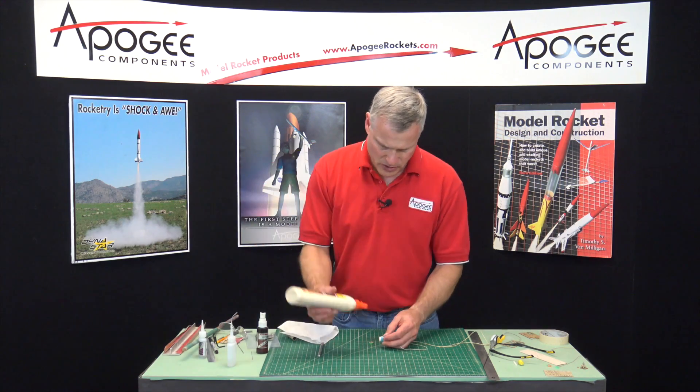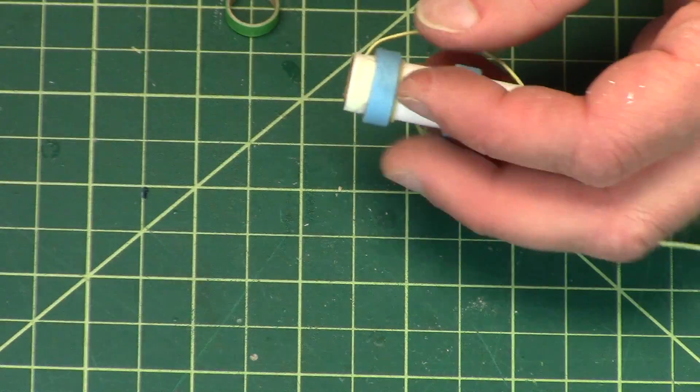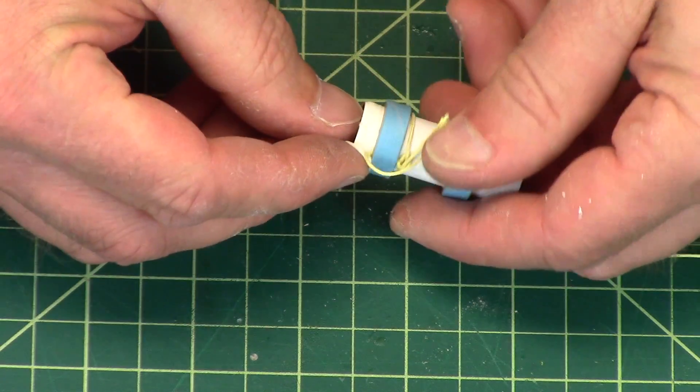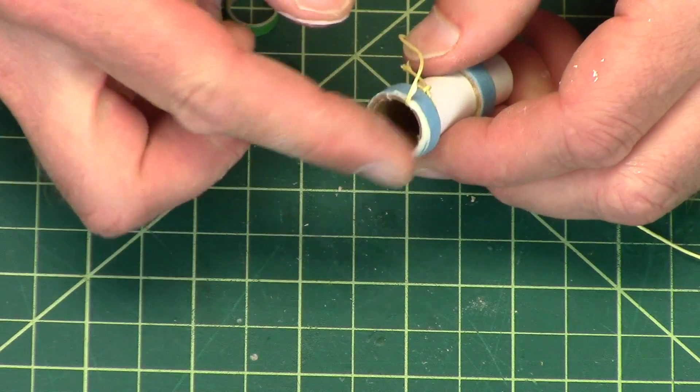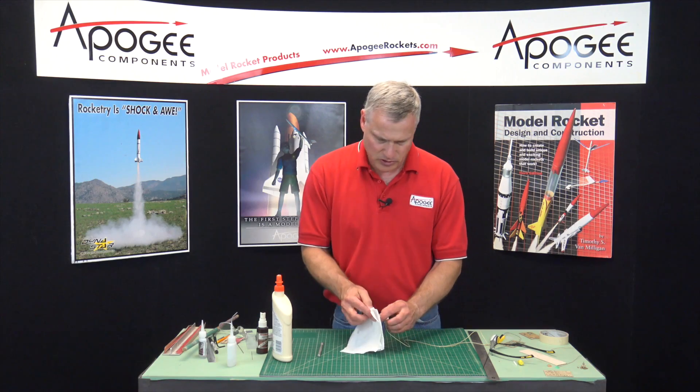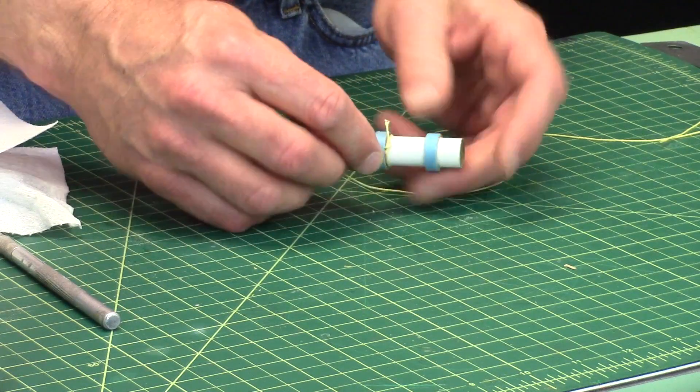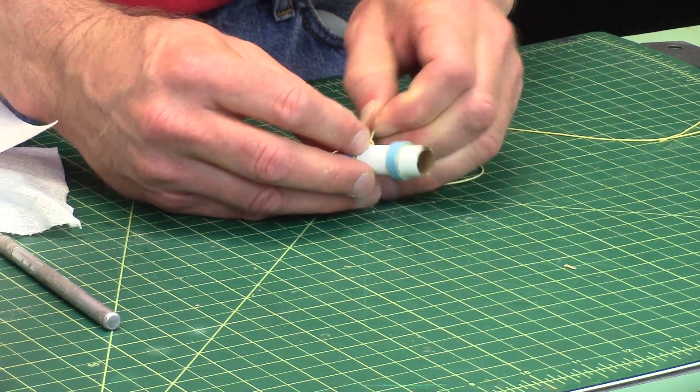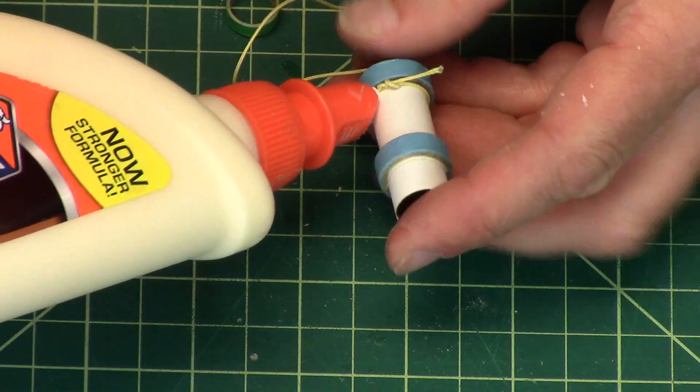Put some glue here, smear it around, and press it down. Now this end I want flush with the tube. Pull on the shock cord, cinch it down. Pull tight on that knot. Now I'm going to put a fillet of glue on this end.